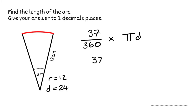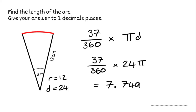So we're going to do 37 over 360 multiplied by pi times the diameter. With diameter 24, that's 37 over 360 multiplied by 24 pi. On the calculator we get 7.7492 — that's enough to round. So to two decimal places this would be 7.75. Our answer is 7.75 centimetres, as the radius was in centimetres.